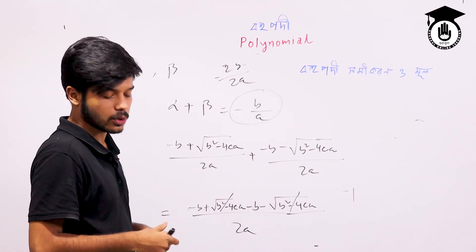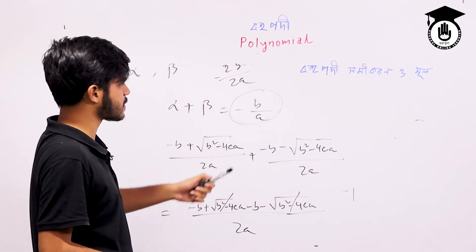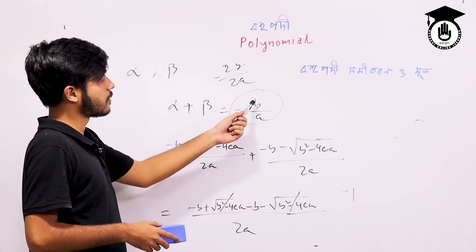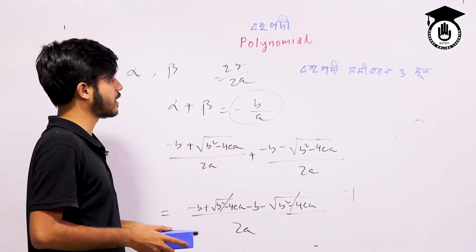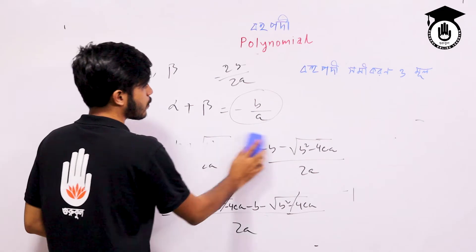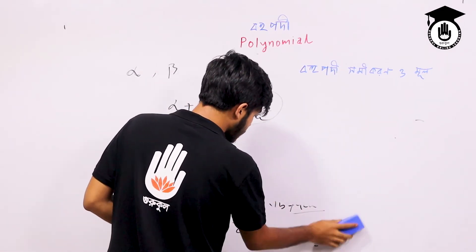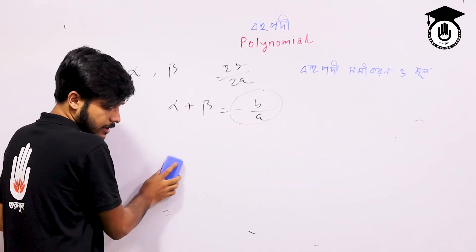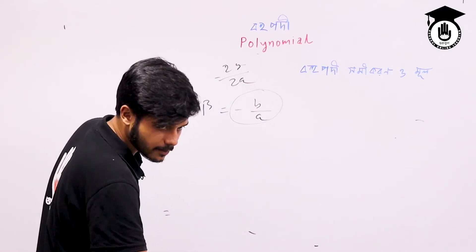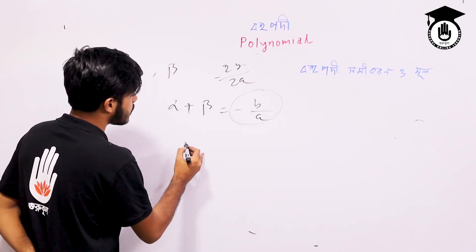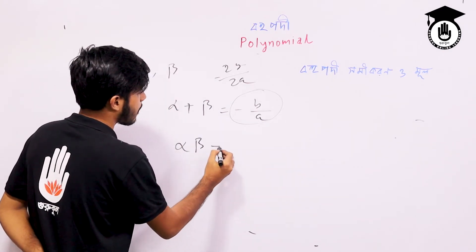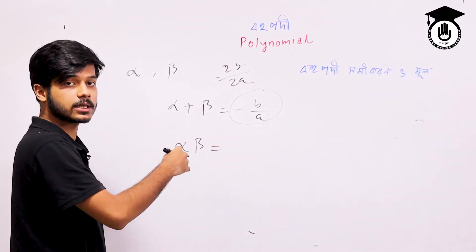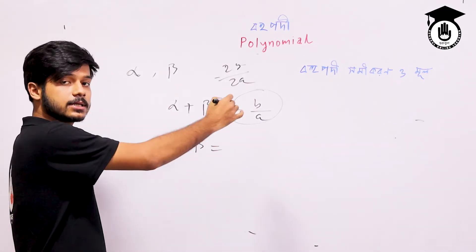So alpha plus beta equals minus b divided by a. And alpha times beta equals c divided by a. This is the formula. When we read this formula, we will see the exact formula and apply it.